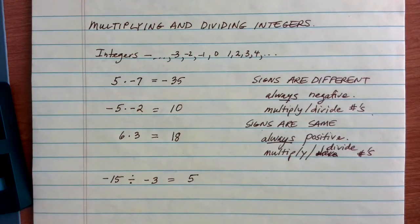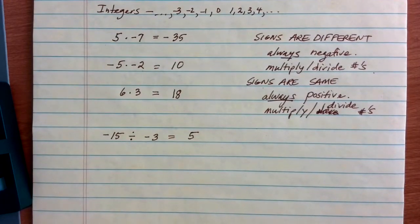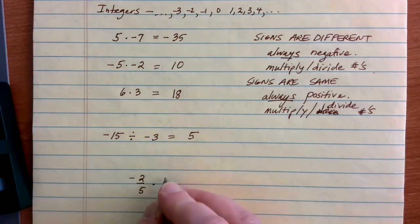Now, like I said before, once we know these rules for positives and negatives, they can work for really anything. Let's suppose, for example, that I wanted to multiply negative 2 fifths times 3 fourths.